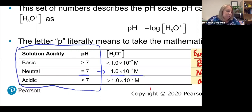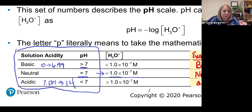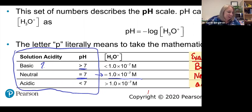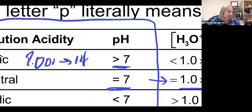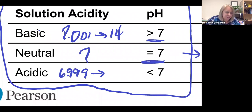Basic solutions have a pH greater than 7 — from 7.001 all the way up to 14. Neutral is exactly 7. Acidic solutions are less than 7 — from 6.9999 all the way down to about 1. So: basic is above seven, acidic is below seven, neutral is seven.